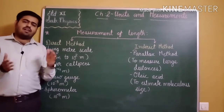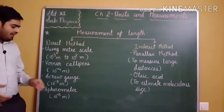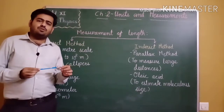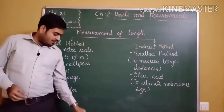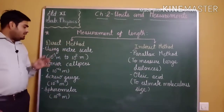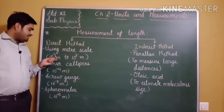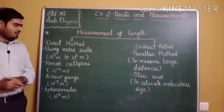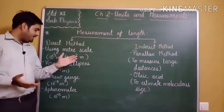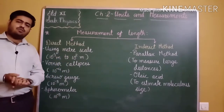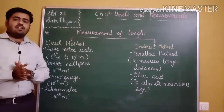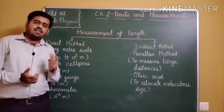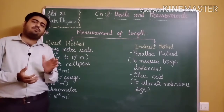Using a meter scale, the smallest length which can be measured is 10 to the power minus 3 meter, and it can measure up to 10 to the power 2 meter. The least count of a meter scale is 10 to the power minus 3 meter, that is 1 millimeter. Least count means the smallest value which can be measured using a given instrument.